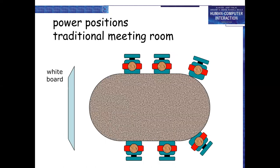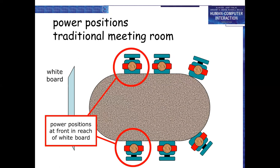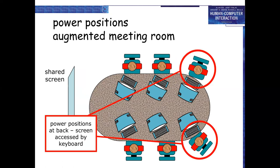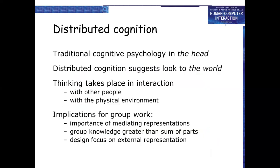Different power positions exist: in a traditional meeting room, power positions are at the front in reach of the whiteboard. In augmented meetings, back screens are accessed by keyboard. Distributed cognition: traditional cognitive psychology focuses on what is in the head, but distributed cognition suggests looking to the world. Thinking takes place in interaction with other people and the physical environment — implications for group work include the importance of mediating representations, that group knowledge is greater than the sum of its parts, and that design should focus on external representation.